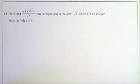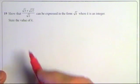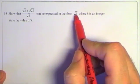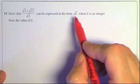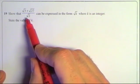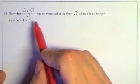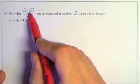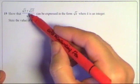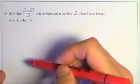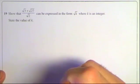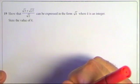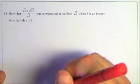Question 19 is one of those awkward surds questions. It wants me to show that this expression can be written in the form √K where K is an integer — so I need to rearrange it into a single square root of an integer. To do that I'll need to combine the surds on the top and then combine the division. Let's start by simplifying the top expression; we can only add surds of the same type, so they both need to be √3.